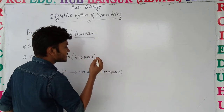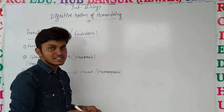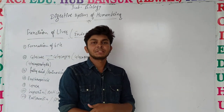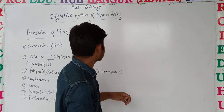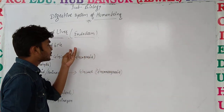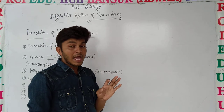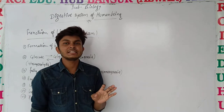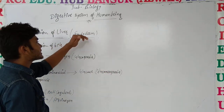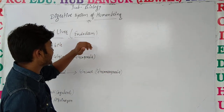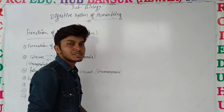Basically, there are three germ layers in the embryonic stage — Ectoderm, Mesoderm, and Endoderm. As I have told you in the last year, in the 11th class. The liver basically originates and arises from the Endoderm.